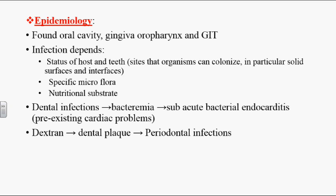Epidemiology: these organisms are always found in the oral cavity, gingival crevices, oropharynx, and GI tract. They cause endogenous infections that depend on a few factors: the status of the host, the teeth, and the sites the organism can colonize. They tend to grow in gaps between tooth structures and caries areas. Specific microflora and nutritional substrates like carbohydrates are essential for these organisms to cause infection.